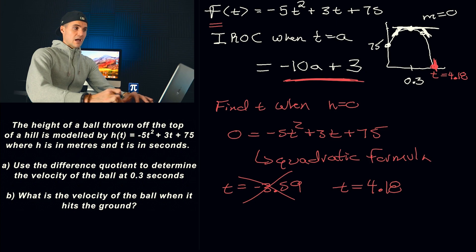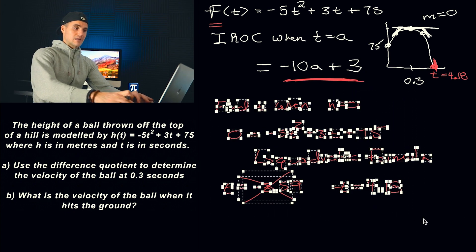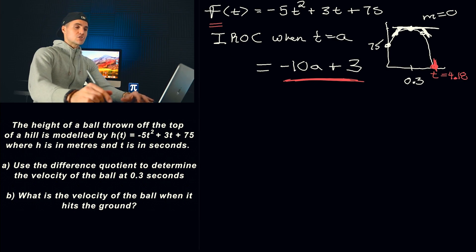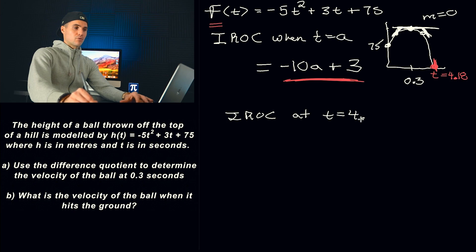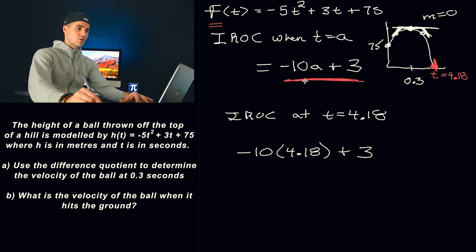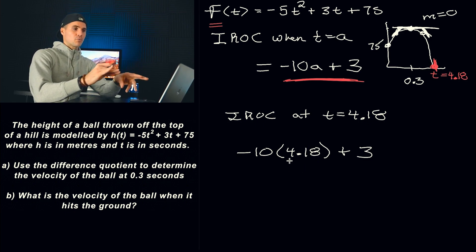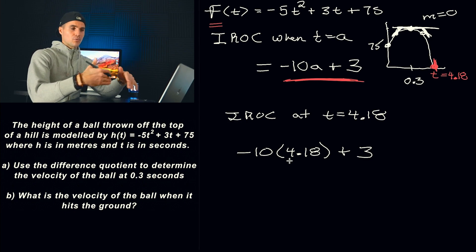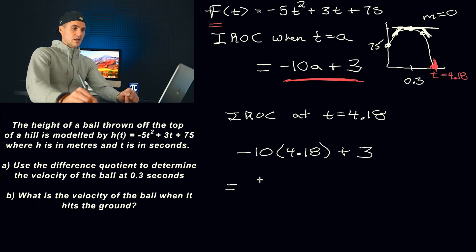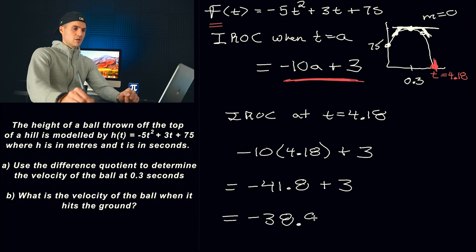We've found the time the ball hits the ground, and we want the instantaneous rate of change at that time — so the instantaneous rate of change at t equals 4.18. We just plug 4.18 in for A in our general expression. That's what's nice about having the general expression: we don't have to go through the whole difference quotient algebra again. So we get negative 10 times 4.18 plus 3, which equals negative 41.8 plus 3.